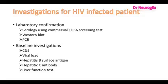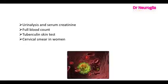Investigations for HIV infected patients: laboratory confirmations include serology using commercial ELISA screening tests, western blot, and PCR. The baseline investigations are CD4 count, viral load, hepatitis B surface antigen, hepatitis C antibody, liver function tests, urinalysis and serum creatinine, full blood count, tuberculin skin tests, and cervical smear in women.